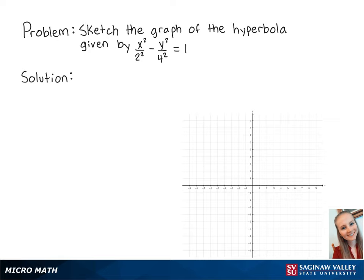For this problem, we're going to sketch the graph of the hyperbola given by x squared over 2 squared minus y squared over 4 squared equals 1.